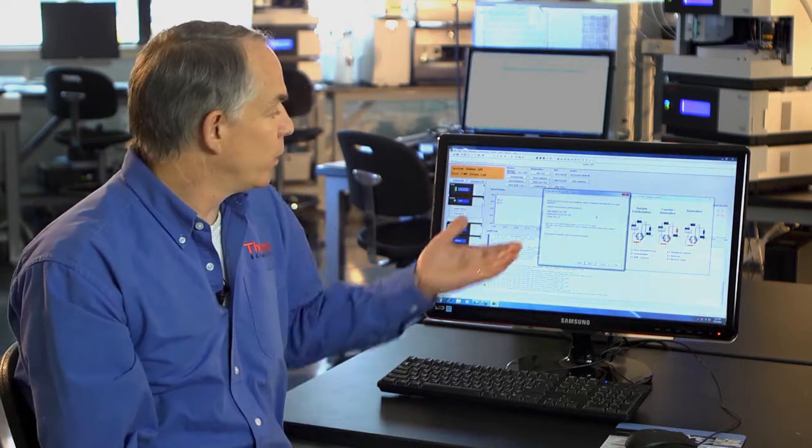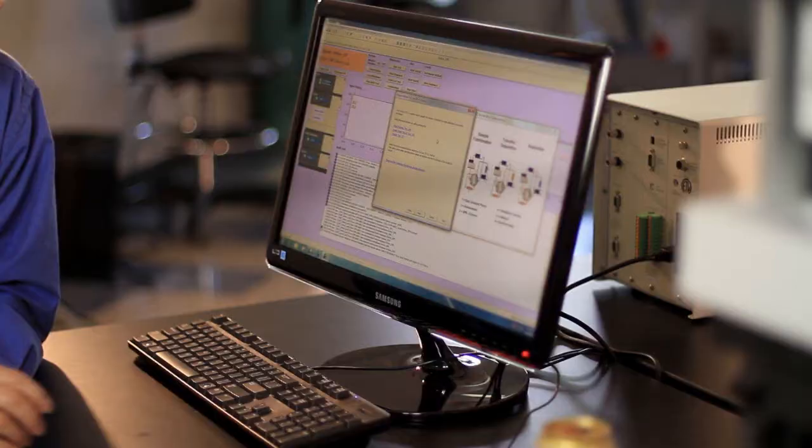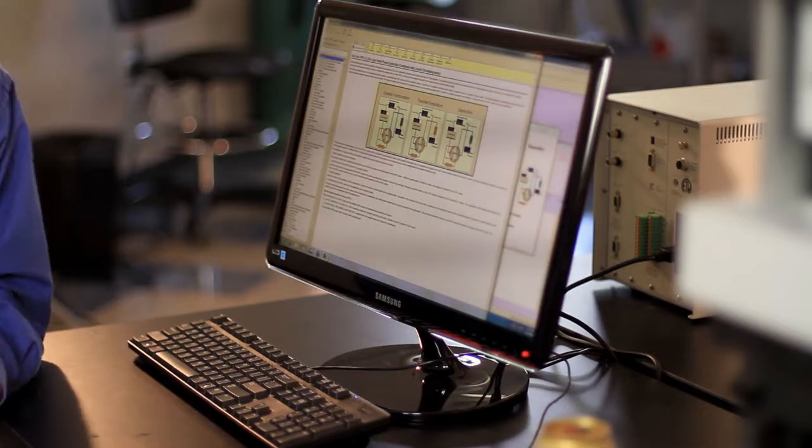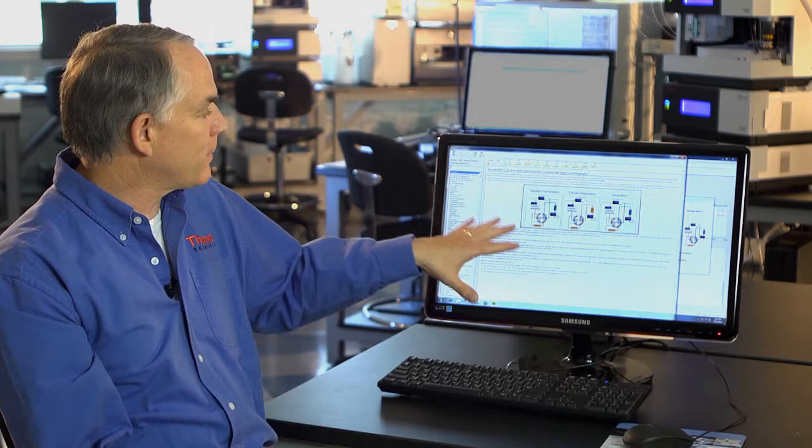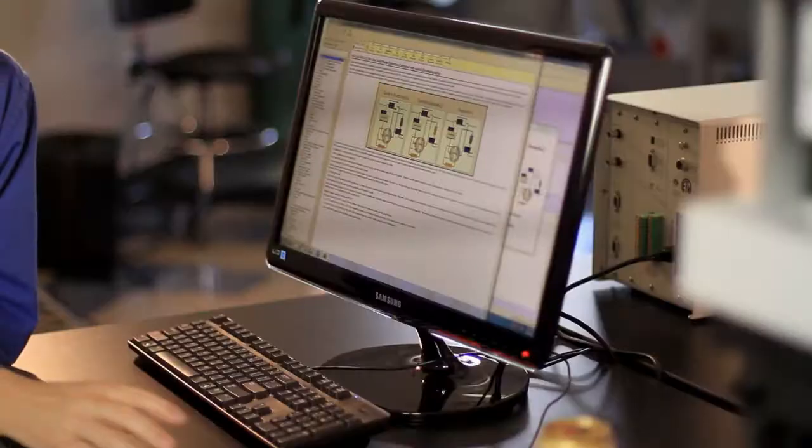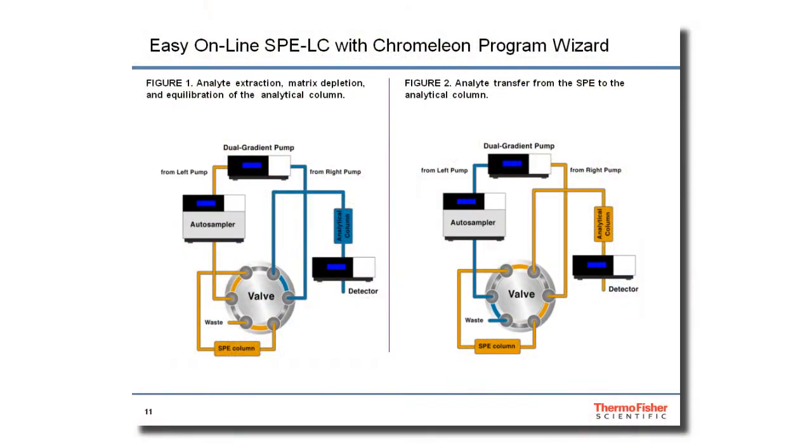Those three things are very simply determined by a couple experiments beforehand. We would have done that at this point and then we would enter those values in as we go along. And I just want to point out that there's a context sensitive help menu. One mouse click and it pulls up a schematic illustrating the main steps and the schematic diagram for the online SPE and gives good instructions explaining what it is and how to set it up. Very handy to refer to that.